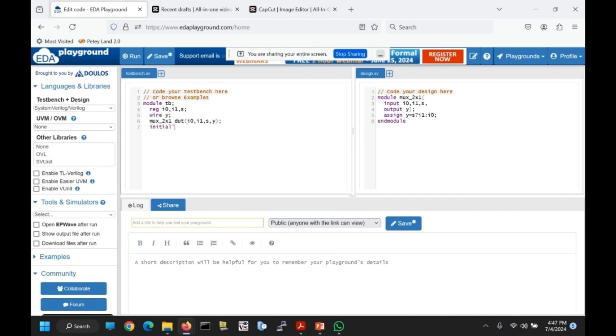Now we need to supply all the inputs. The initial block. s is equal to 0, I0 is equal to 0, I1 is equal to 1.